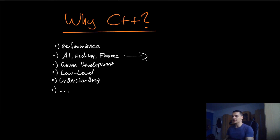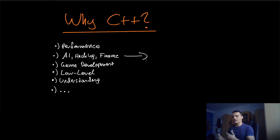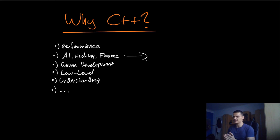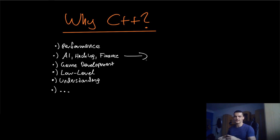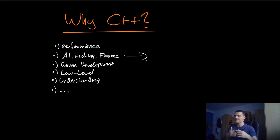Performance is a very big advantage of C++, and it's why C++ is so highly used in AI, hacking, and finance. In finance especially, you need very fast execution time — the models can be designed and structured in Python, but the actual code often has to be written in C or C++, sometimes even in assembly, because everything is about milliseconds. In AI, libraries like TensorFlow and NumPy, and Python itself, are actually written in C and C++.